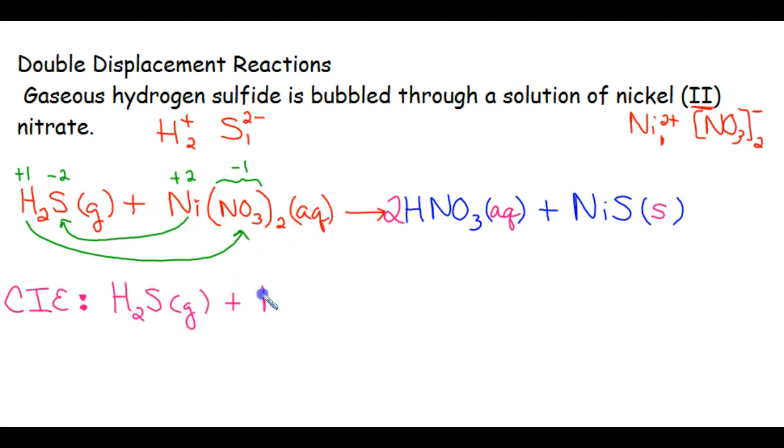Our next reactant is aqueous, so we do need to break it apart. There is one nickel ion, so it's not going to need a coefficient, but we have to be sure to write the charge on the ion. Now there are two nitrate ions, so we're going to need a coefficient here. And again, make sure you put the charge on the ion.